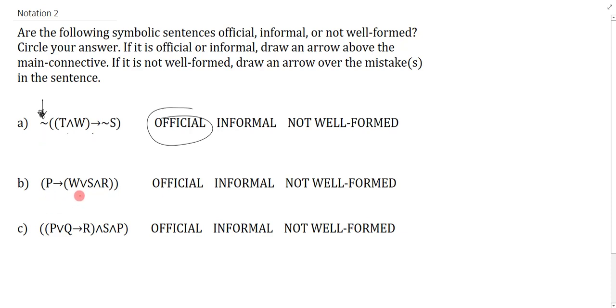Next we have P arrow bracket W or S and R bracket bracket. Again, two opens, two close, but I have three binary connectives, so it might be informal. All the letters check out, but of course there is a mistake here.